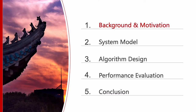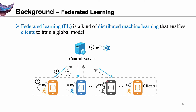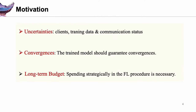First, it's about background and motivation. Federated learning is a kind of distributed machine learning which enables clients to train a global model. Each client participates in training using its local data and then sends model updates to a server. These model updates are aggregated to update the global model. However, each client is heterogeneous by nature, dramatically impacting their training quality. Correspondingly, client selection becomes increasingly essential for high-quality federated learning.